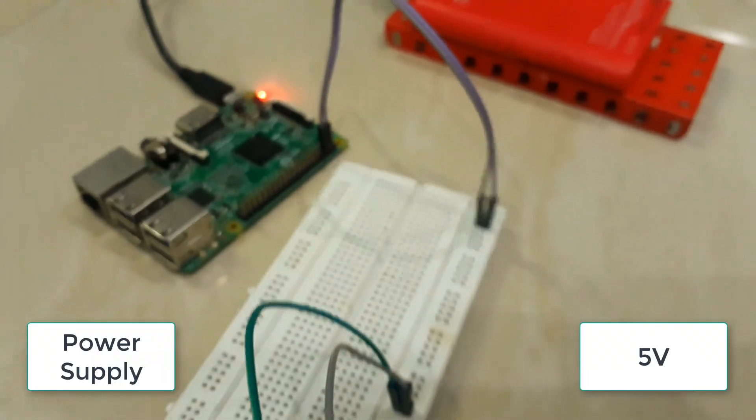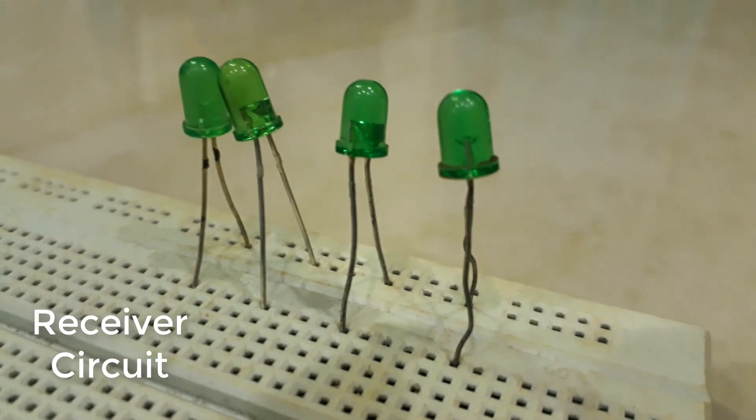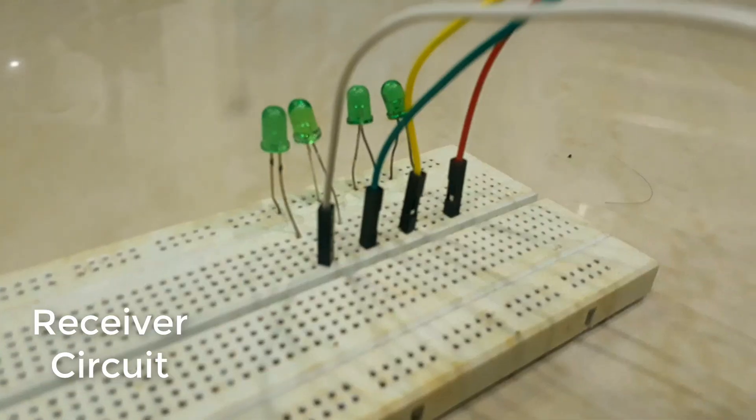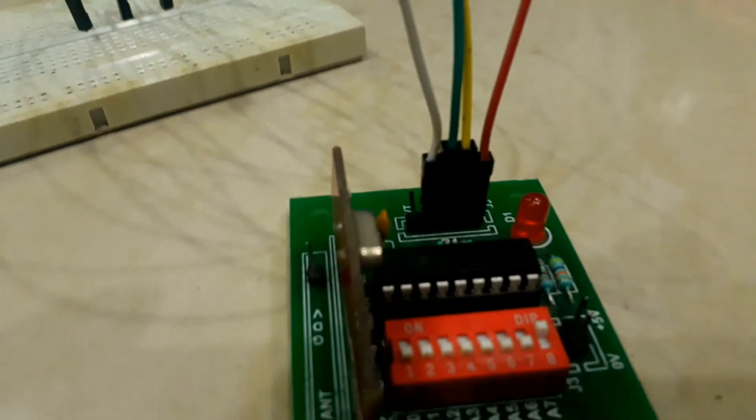I have taken the power supply from Raspberry Pi. For the receiver circuit, connect all the positive terminals of the LED to the digital pins of the decoder. Don't forget to ground your LED pins.